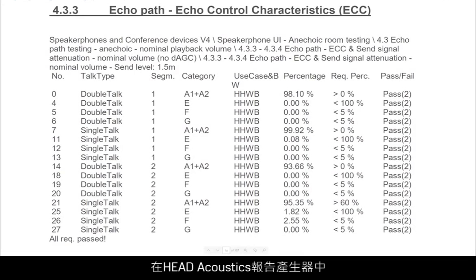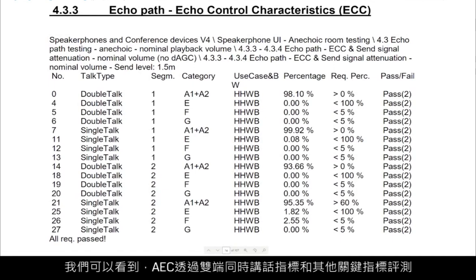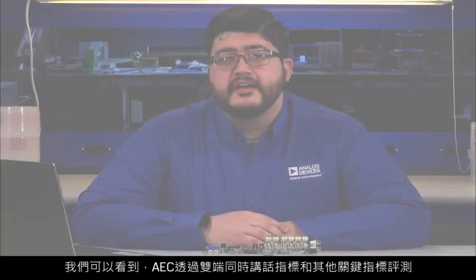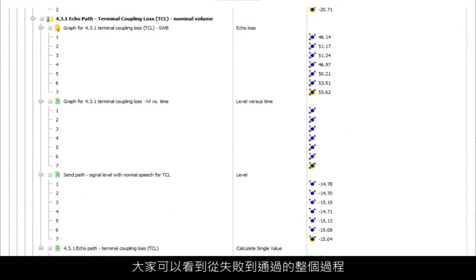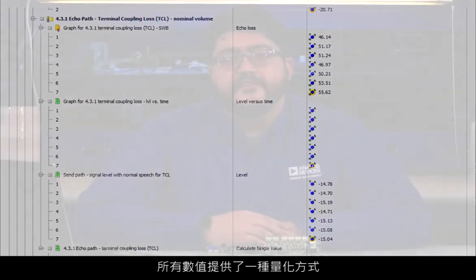In the Head Acoustics report generator, we can see that the AEC passes the double talk metric and other key parameters. We will return to the Head Acoustics software where you can see the progression from results failing to passing. Each of these numbers provides a quantitative way to see the progression and performance from an untuned system to the fine-tuned setting.